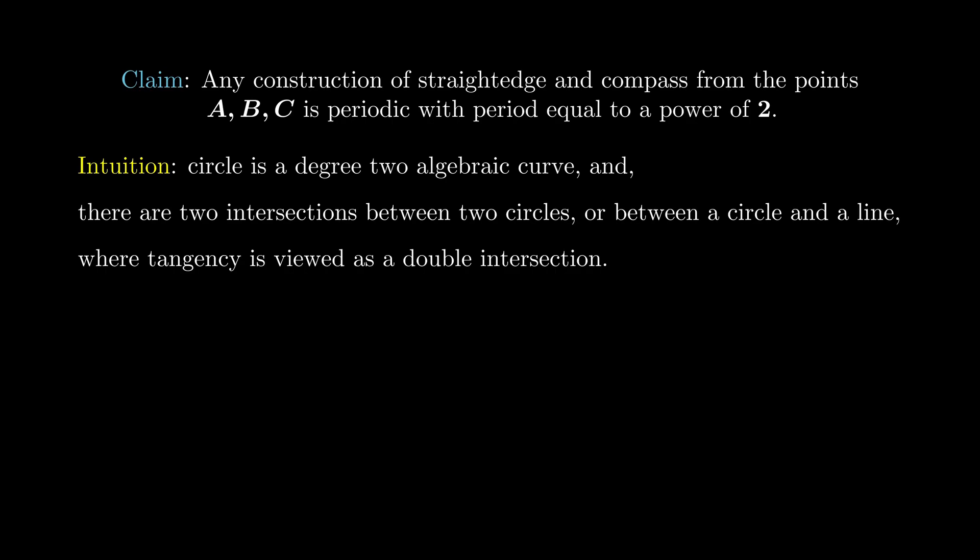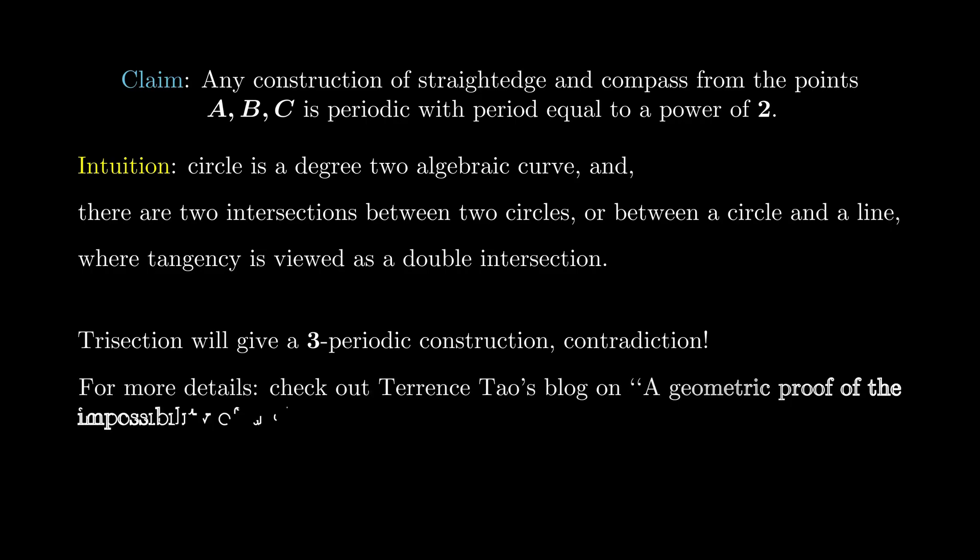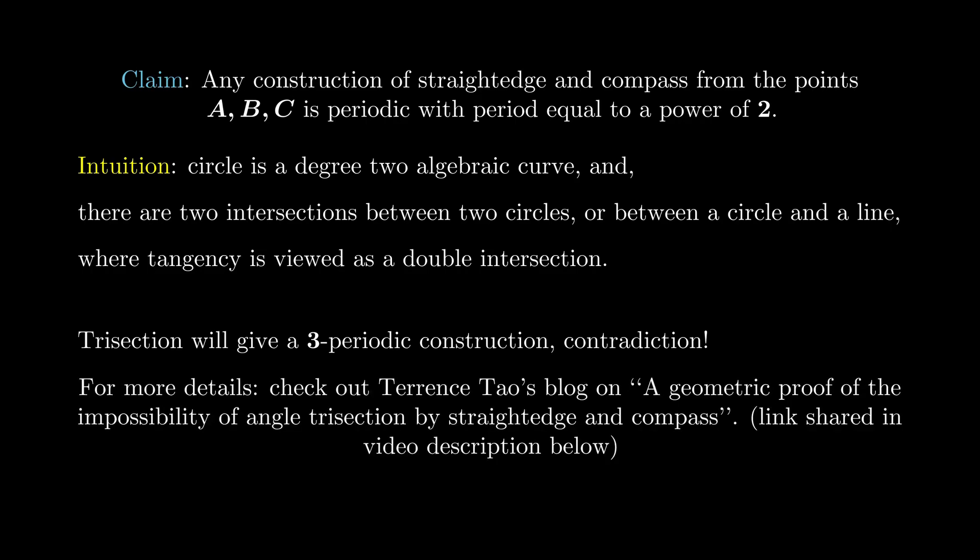With this in hand, the conclusion is quite straightforward. If trisection is possible, then it is three periodic, which is clearly not a power of 2. So this gives us a contradiction.